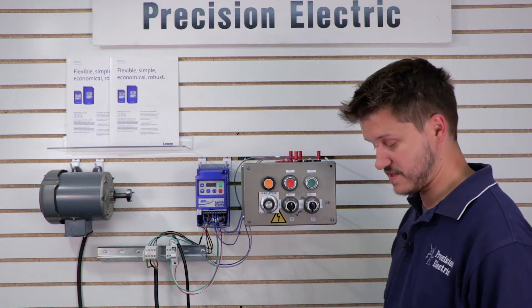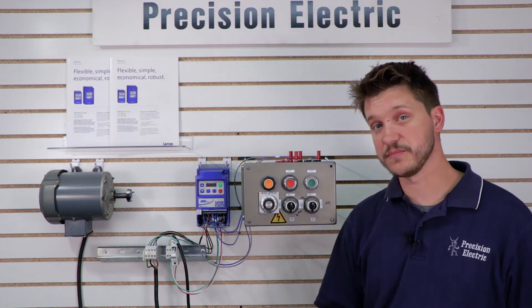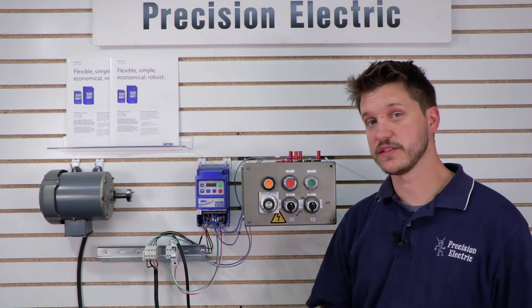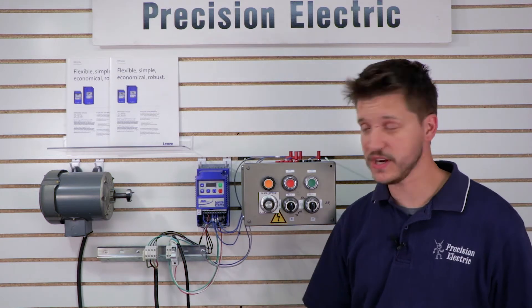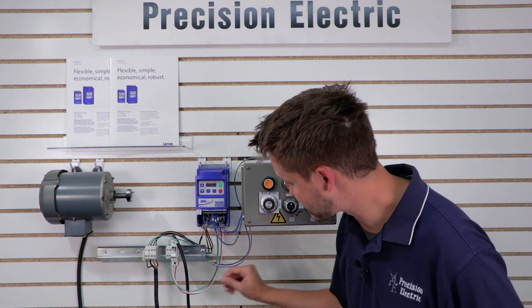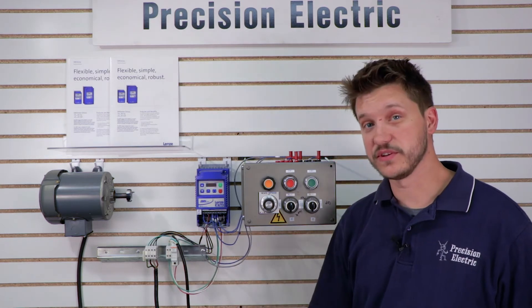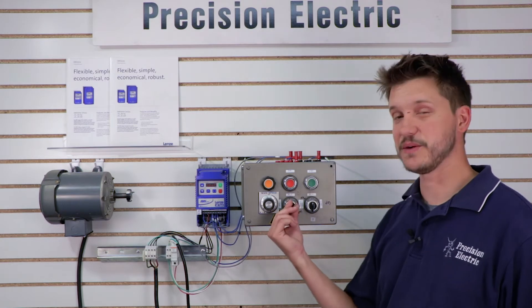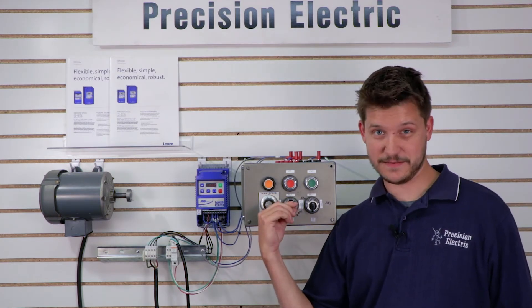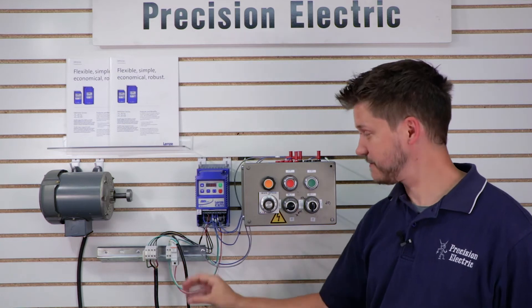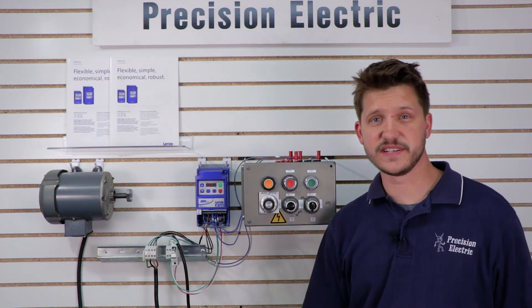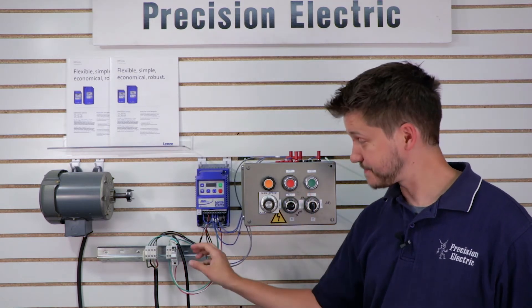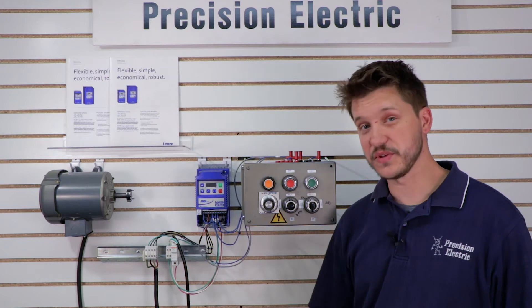The first one we're going to go over though is number one, which is start on powerup, which means that if I set parameter 110 to one, the drive will actually start as soon as I apply power to the drive. And here is an example of that. I'm going to apply power to the drive. I've already pre-programmed 110 to start on powerup. Notice it didn't start, but that was just because I didn't have my run command. That's an important lesson actually to take from this is that it won't start on powerup if you don't have some kind of a run command programmed for it.